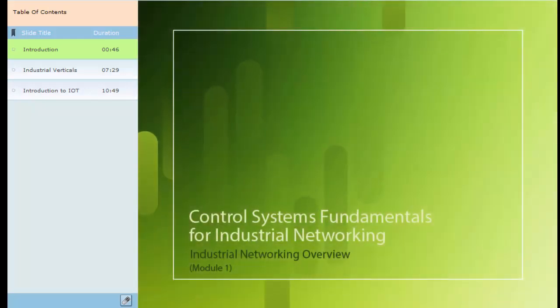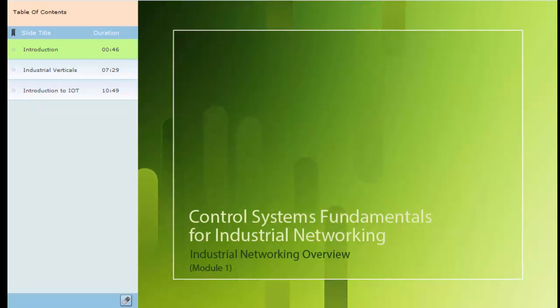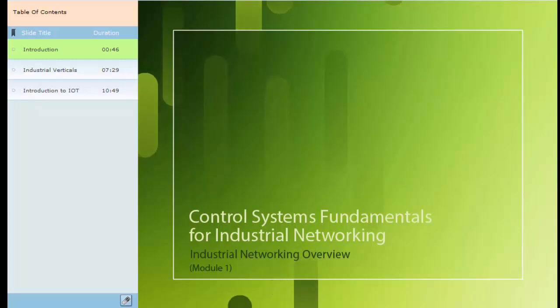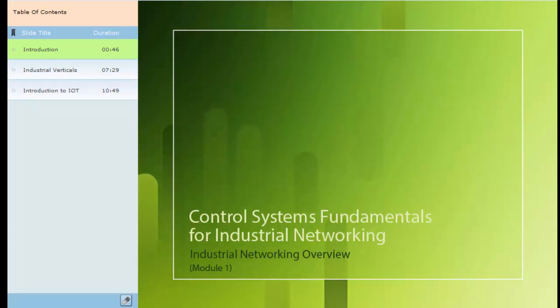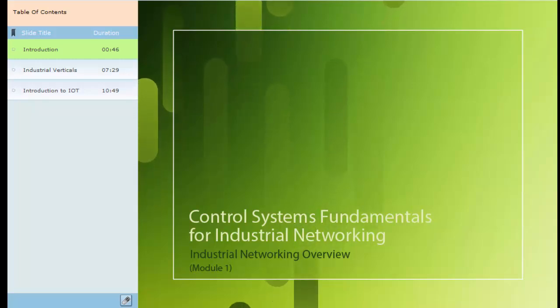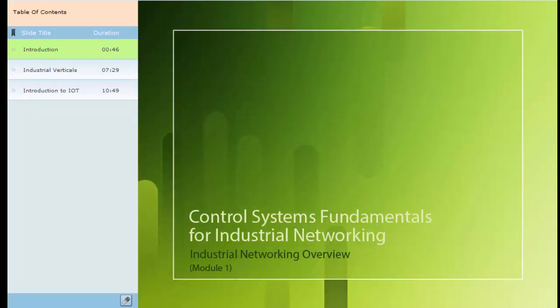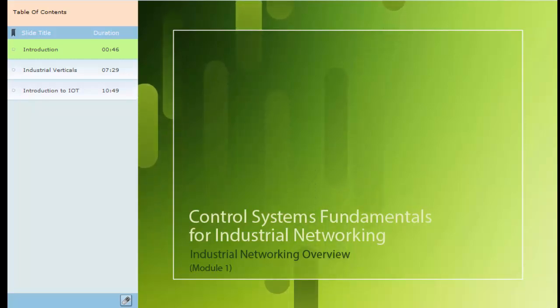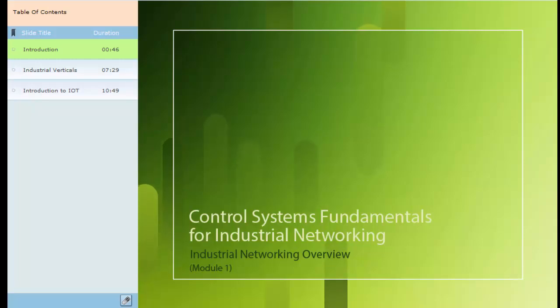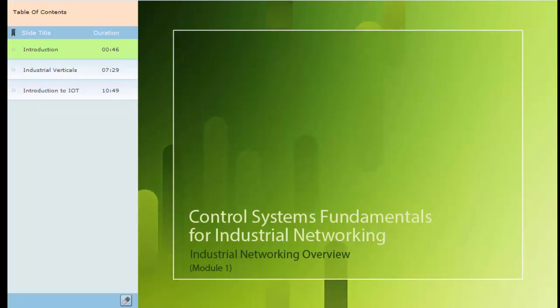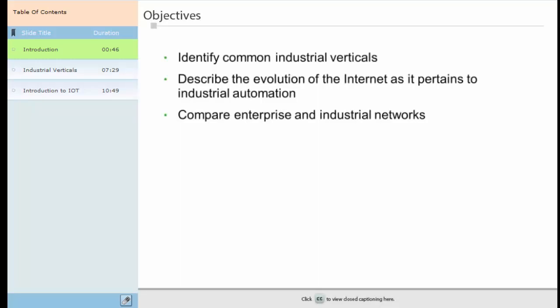Welcome to the Industrial Networking Overview module of the Control Systems Fundamentals for Industrial Networking course. The goal of this course is to enable learners to assimilate the information presented in future training courses, such as managing industrial networks with Cisco networking technologies. As IT personnel, you may be asking: what is an industrial network? This module presents a high-level overview of common industrial verticals and an introduction to industrial networking. After completing this module, you will be able to identify common industrial verticals, describe the evolution of the Internet as it pertains to industrial automation, and compare enterprise and industrial networks.